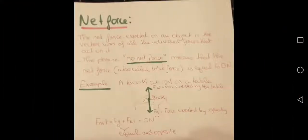Net force. The net force exerted on an object is the vector sum of all the individual forces that act on it. The phrase 'no net force' means that the net force, also called the total force, is equal to zero newtons. So when we say there is no net force, we do not mean that there is no force acting on the object — we only mean that the combination of the forces is equal to zero newtons.